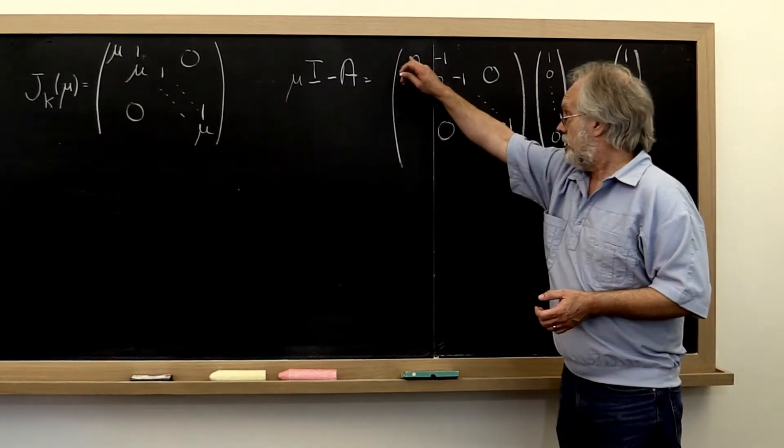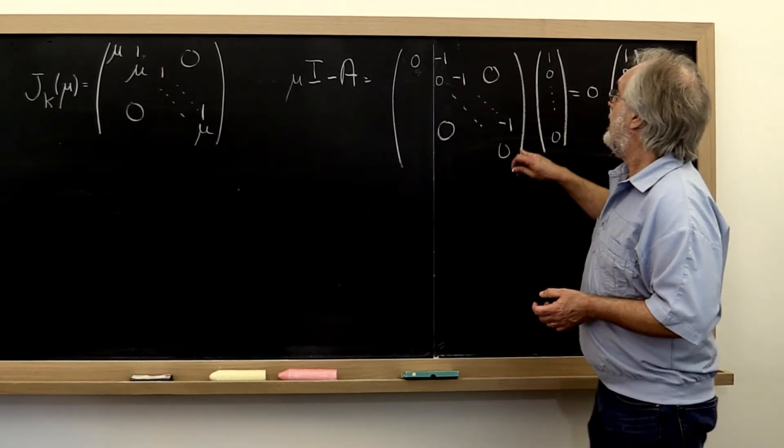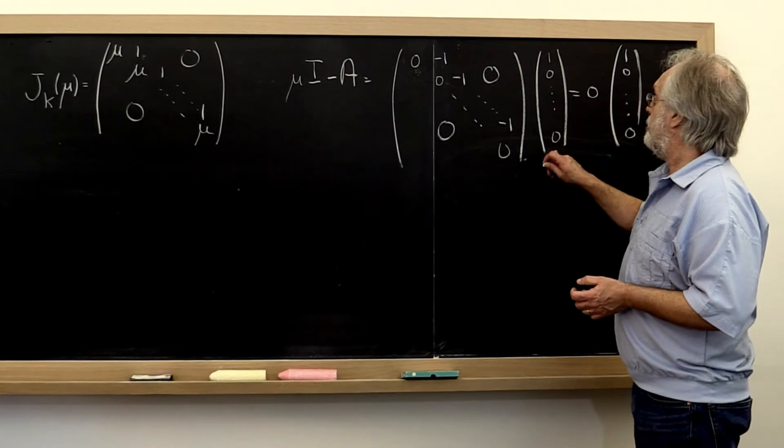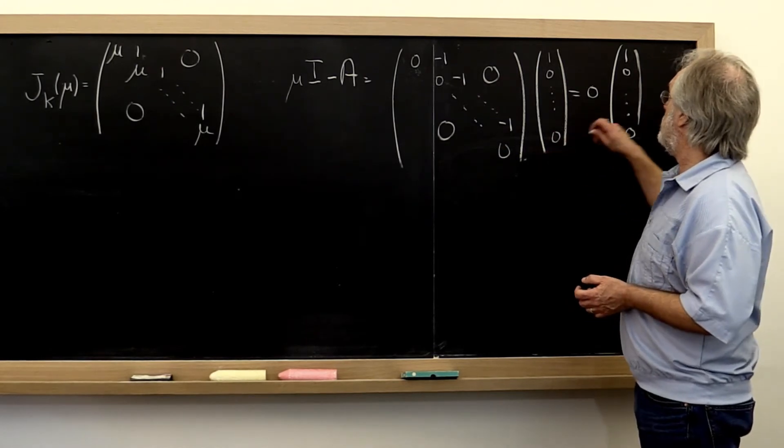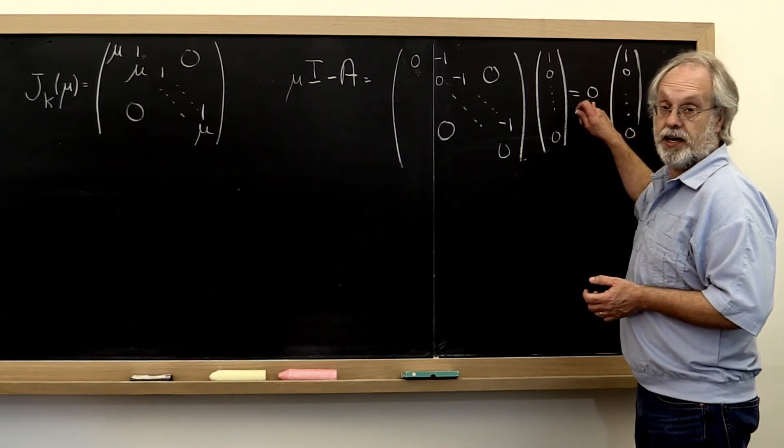So this matrix has only zero as its eigenvalue, and multiplying it times the first standard basis vector gives you back that standard basis vector scaled by the eigenvalue.